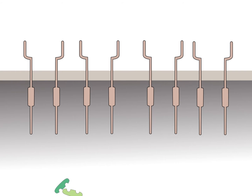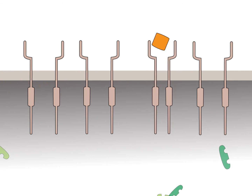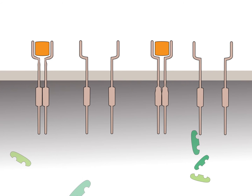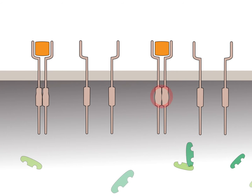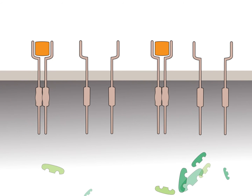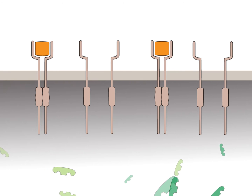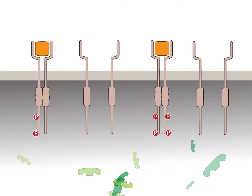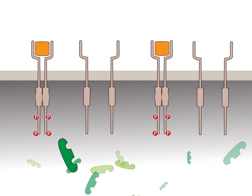In the normal situation, when growth factors, shown in orange, bind to the extracellular domains of their receptors, the receptor monomers dimerize. The cytoplasmic tyrosine kinase domains of the receptor monomers are activated, and tyrosine residues of the cytoplasmic domain are phosphorylated.